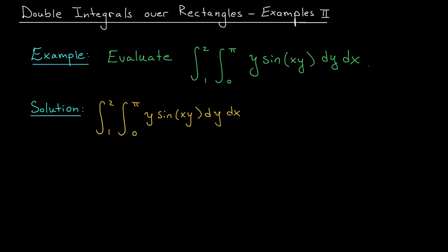We have one more example for evaluating double integrals over rectangles. We're looking at the integral from 1 to 2 of the integral from 0 to pi of y sine(xy) dy dx. Our inner integral is with respect to y, and our outer integral is with respect to x.